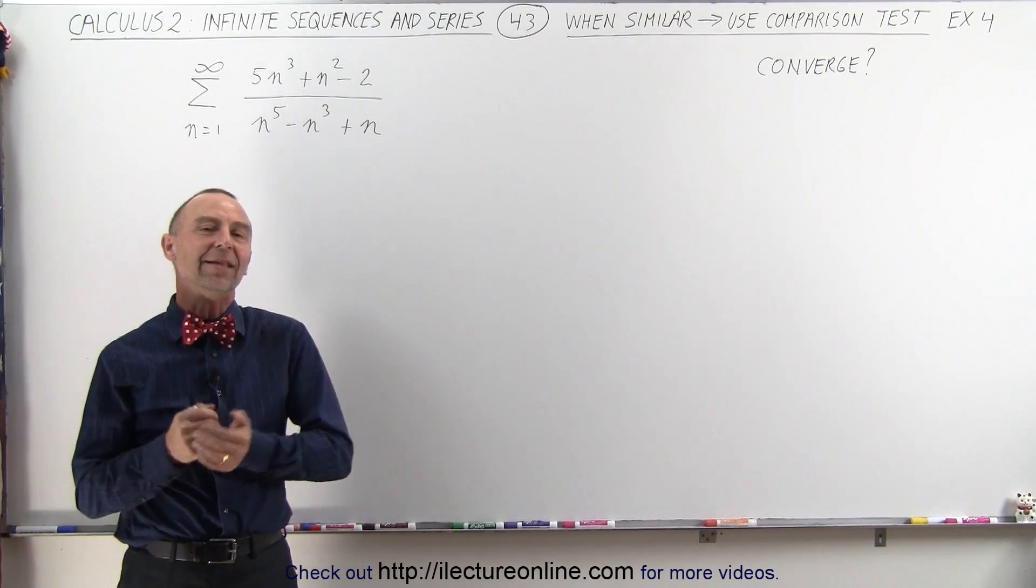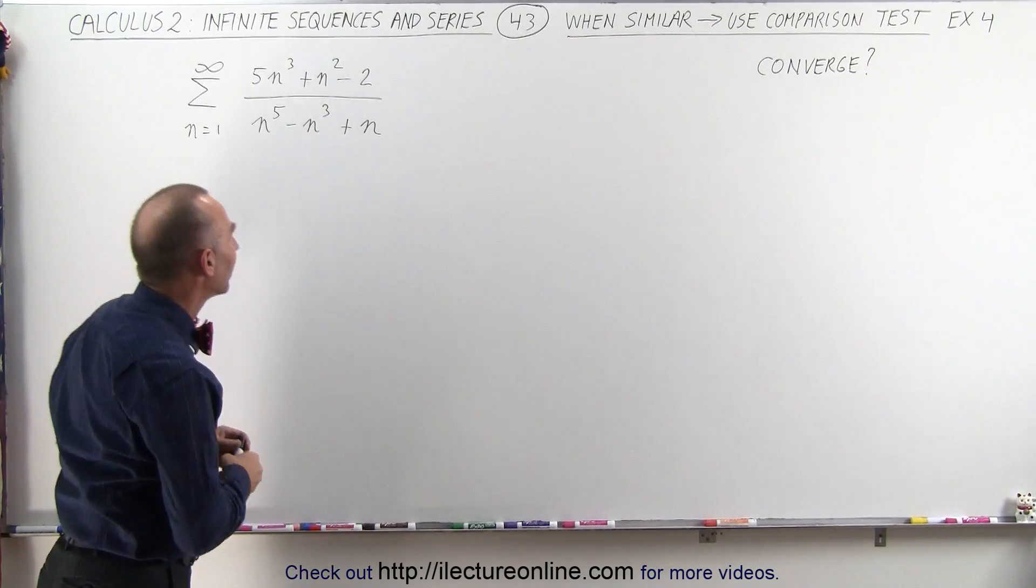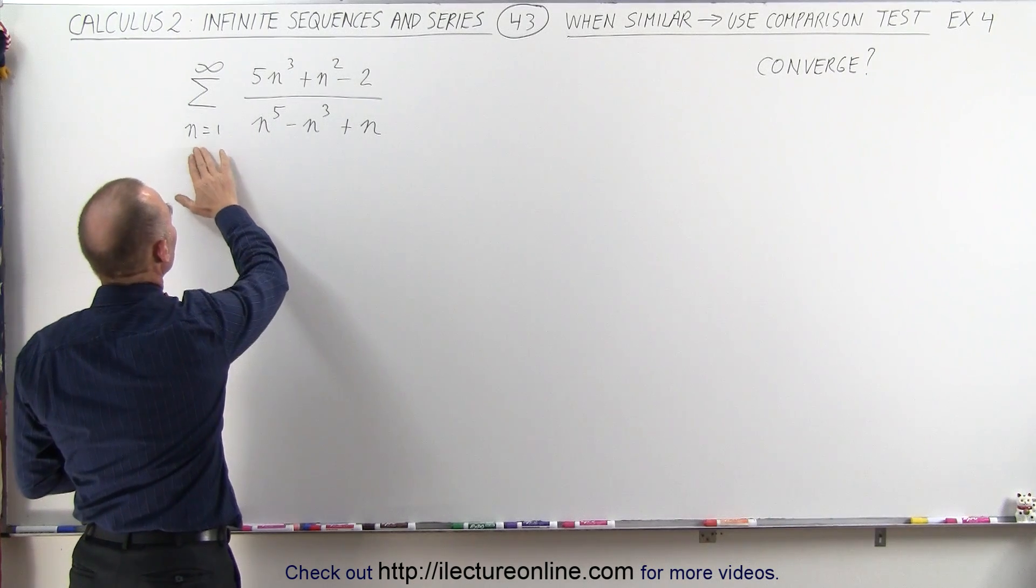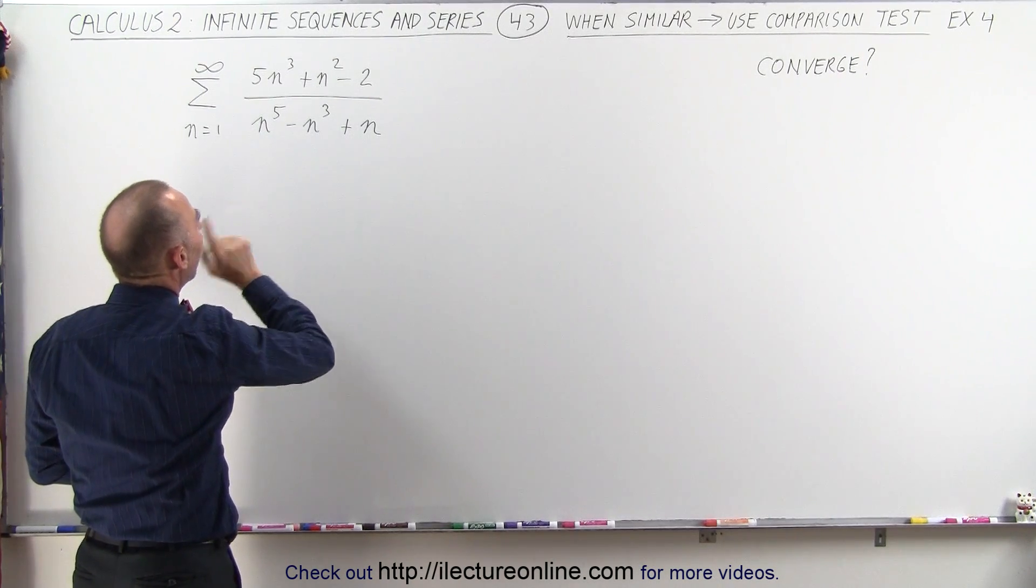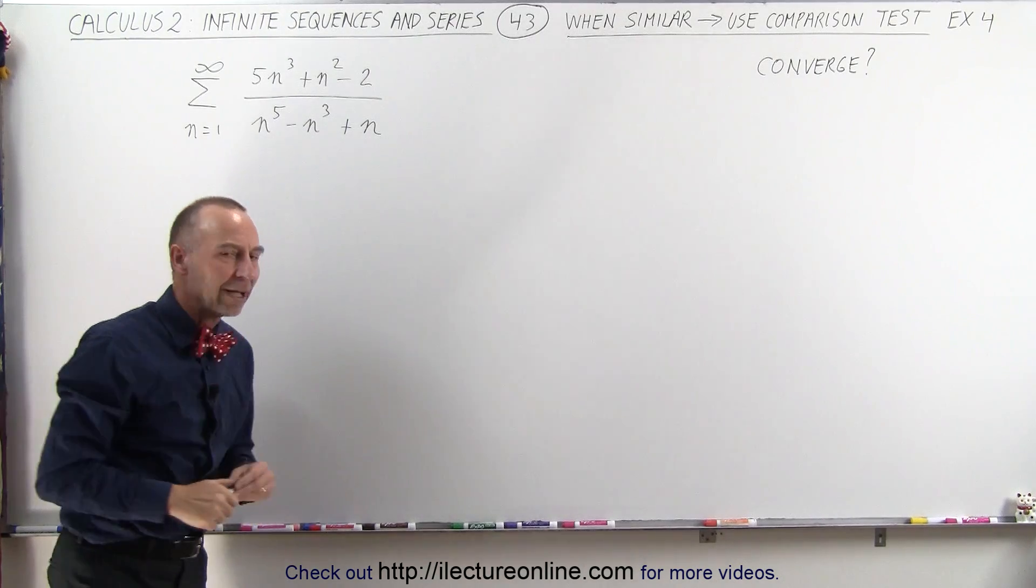Welcome to our lecture online. Now let's look at this example. Again, we have an infinite sum from n equals 1 to infinity. And how can we tell if this converges or diverges?